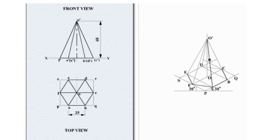Now differentiate the thin and thick lines: the hexagon base lines A-B, B-C, C-D, D-E, E-F must be thick lines, and the remaining visible lateral lines to the apex must also be thick lines. This is the solution for this problem. If you have any doubts, please comment in the below section. Thank you for watching.